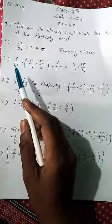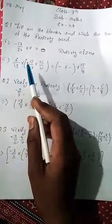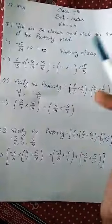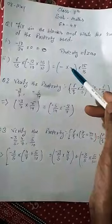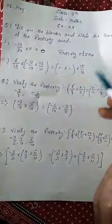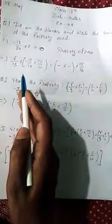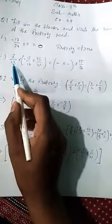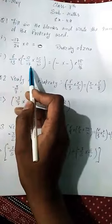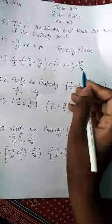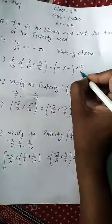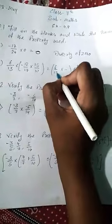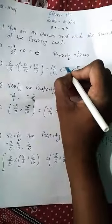Next part: 6 by 13 multiply by bracket minus 12 by 17 multiply by 15 by 10 equals bracket blank multiply by blank multiply by 15 by 16. We need to check what is on the right side should be on the left side. On the left side we have 6 by 13, minus 12 by 17, and 15 by 10. So the answer is 15 by 10, 6 by 13, and minus 12 by 17.